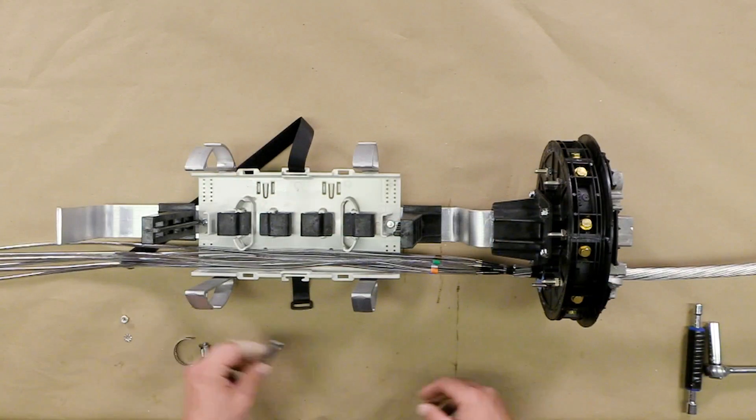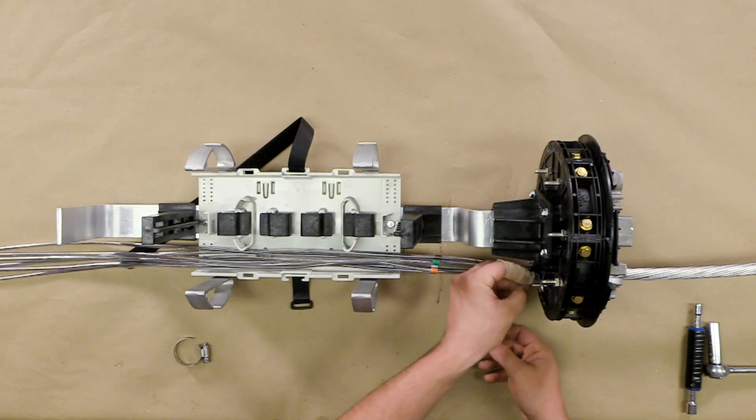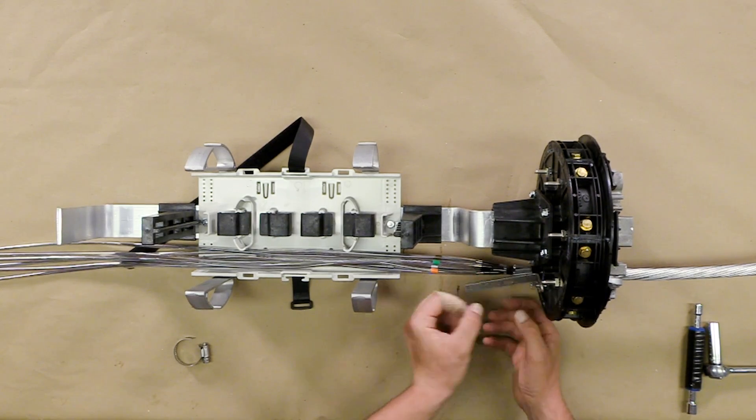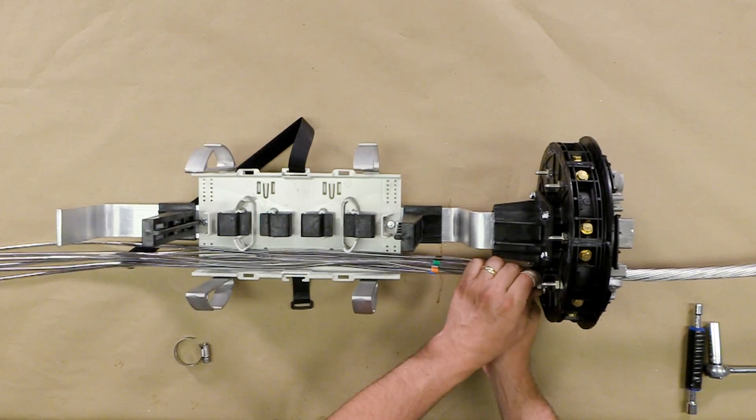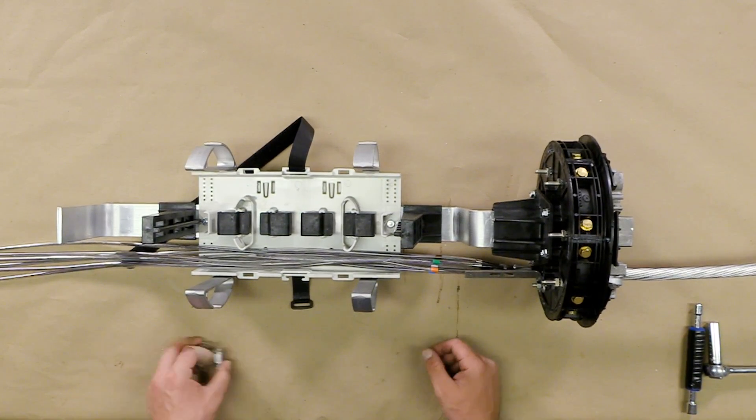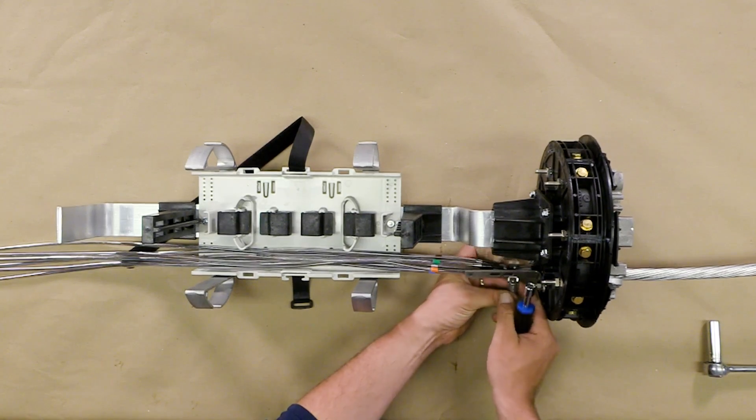Secure the L-bracket to the inside of the end plate. Then secure the OPGW cable to the bracket using a hose clamp. Repeat this process for all additional cables.